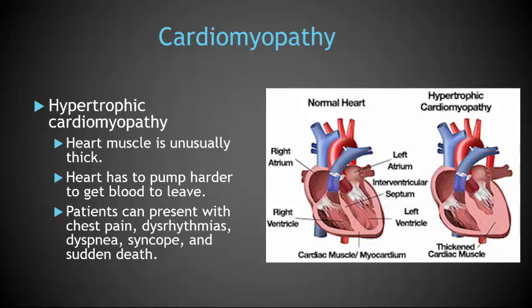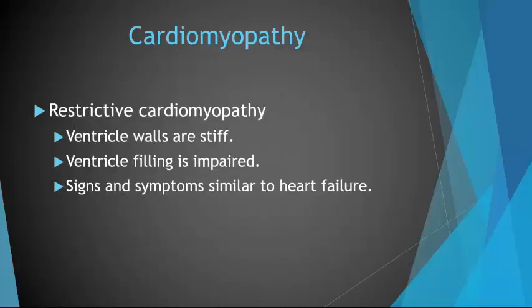Hypertrophic cardiomyopathy is a condition where the heart muscle is unusually thick and the heart has to pump harder to get blood to leave. This type is an inherited disorder. Symptoms usually appear in the school-age years or during adolescence and may include chest pain, dysrhythmias, dyspnea with exertion, syncope, and sudden death. When hypertrophic cardiomyopathy occurs during infancy, signs and symptoms are those of heart failure. Restrictive cardiomyopathy is a condition where ventricular filling is impaired because the walls of the ventricles are stiff due to endocardial disease, myocardial disease, or both.